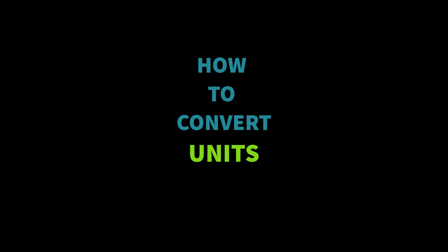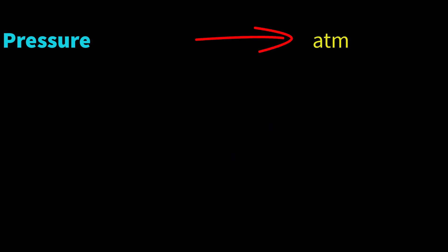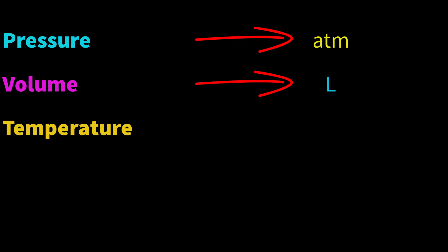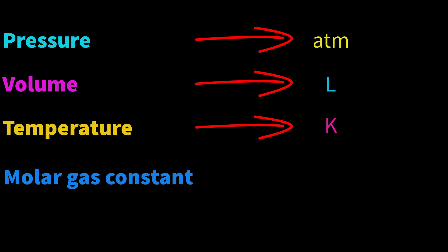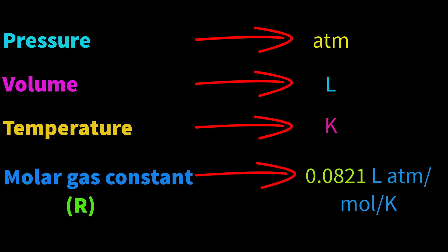Now we will learn how to convert units. We can take any system we like, but in chemistry we will always try to solve mathematical problems using liter-ATM units. That means we will always convert pressure into ATM, volume into liters, temperature into Kelvin, and we will always take the value of molar gas constant R as 0.0821 liter-ATM per mole per Kelvin.